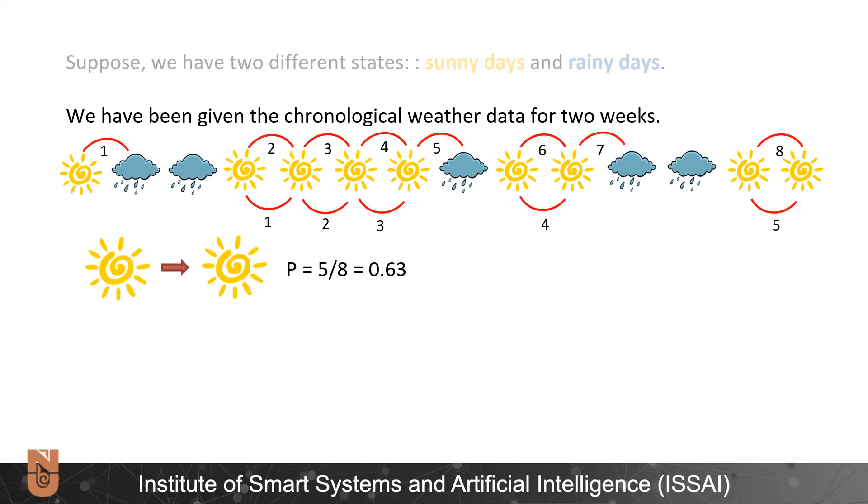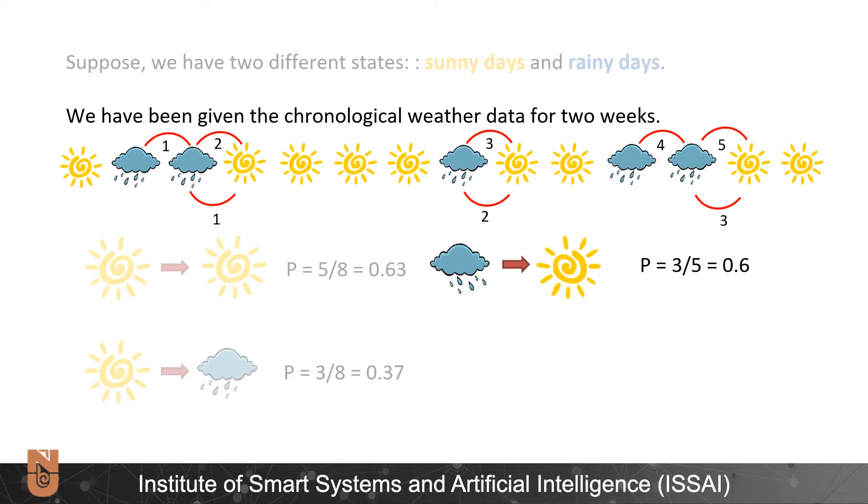As we have in total eight transitions from sunny and only five among which from sunny to sunny, the probability that if today is sunny tomorrow will also be sunny is 0.63. Therefore the probability that if today is sunny and tomorrow is rainy is 0.37. In the same way the transition probabilities for the rainy case can be estimated. From rainy to sunny is 0.6 and from rainy to rainy state is 0.4.